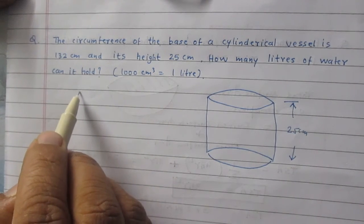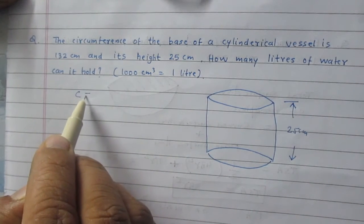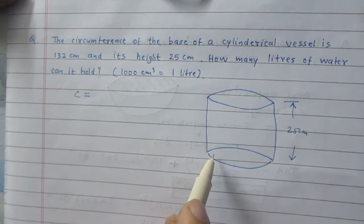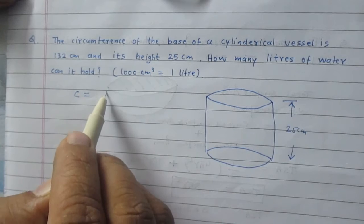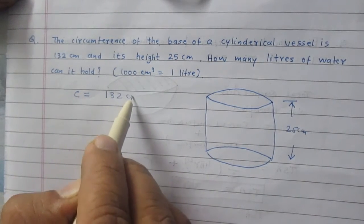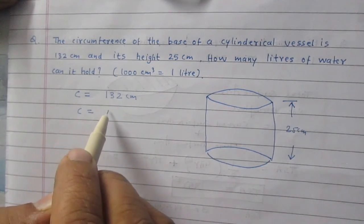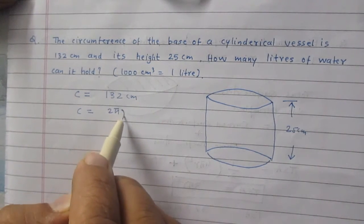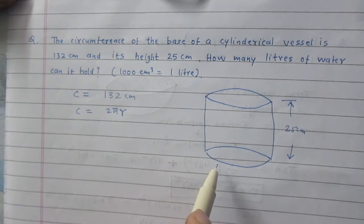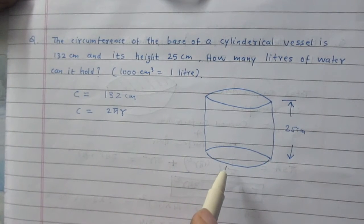We know that circumference of a circular base of this cylinder is 132 cm. According to formula, circumference should be 2πr where r stands for the radius of the base of this cylinder.